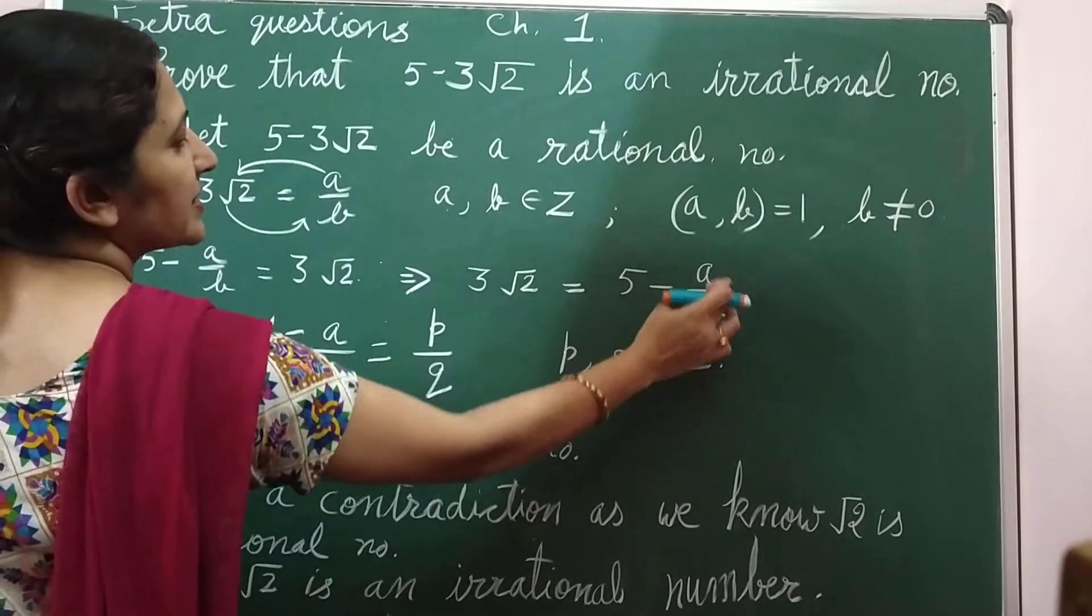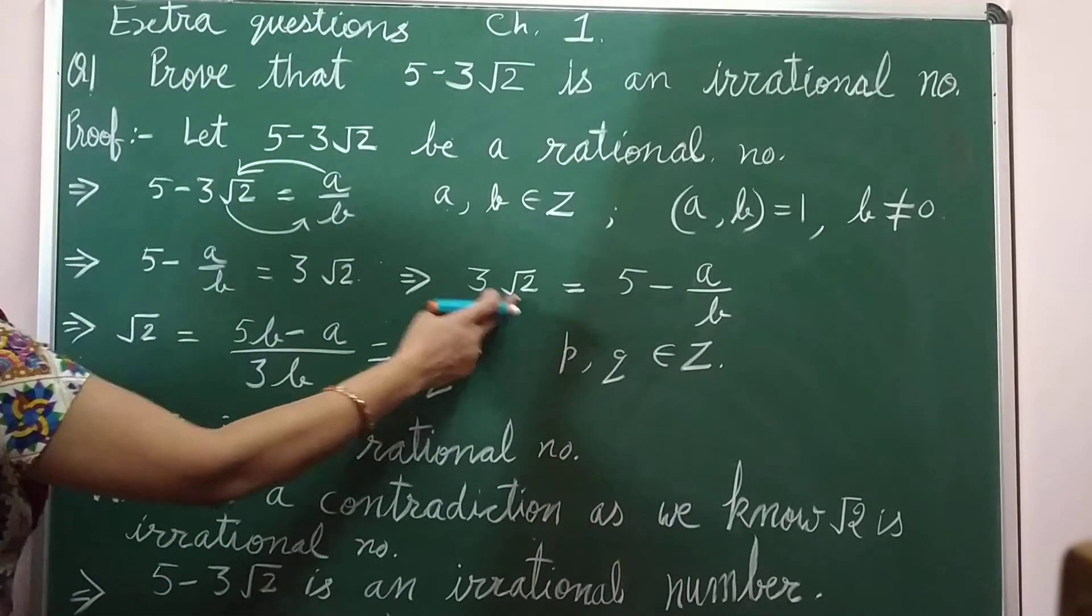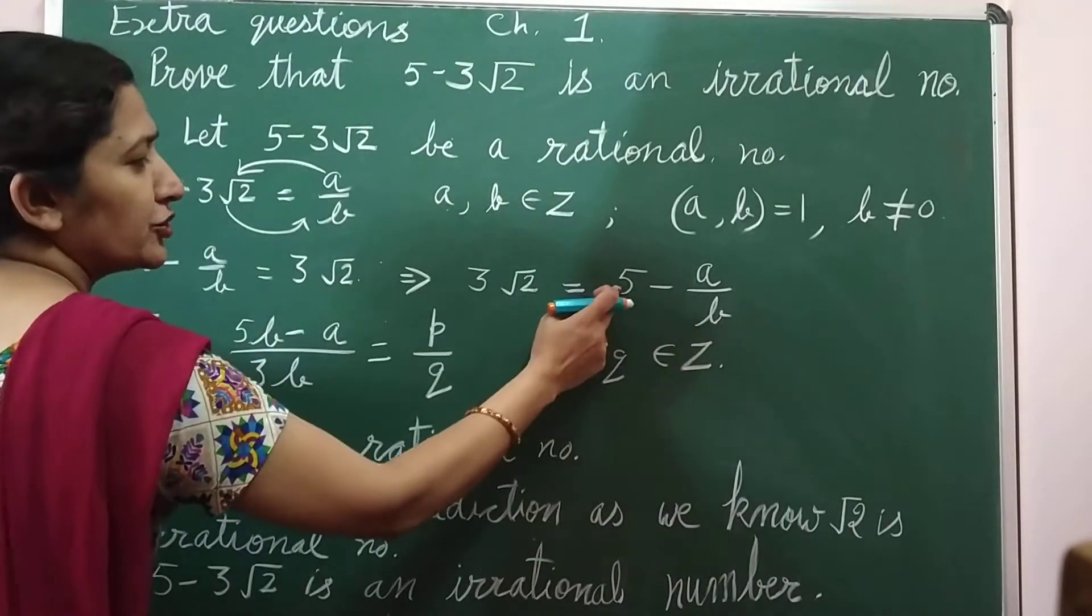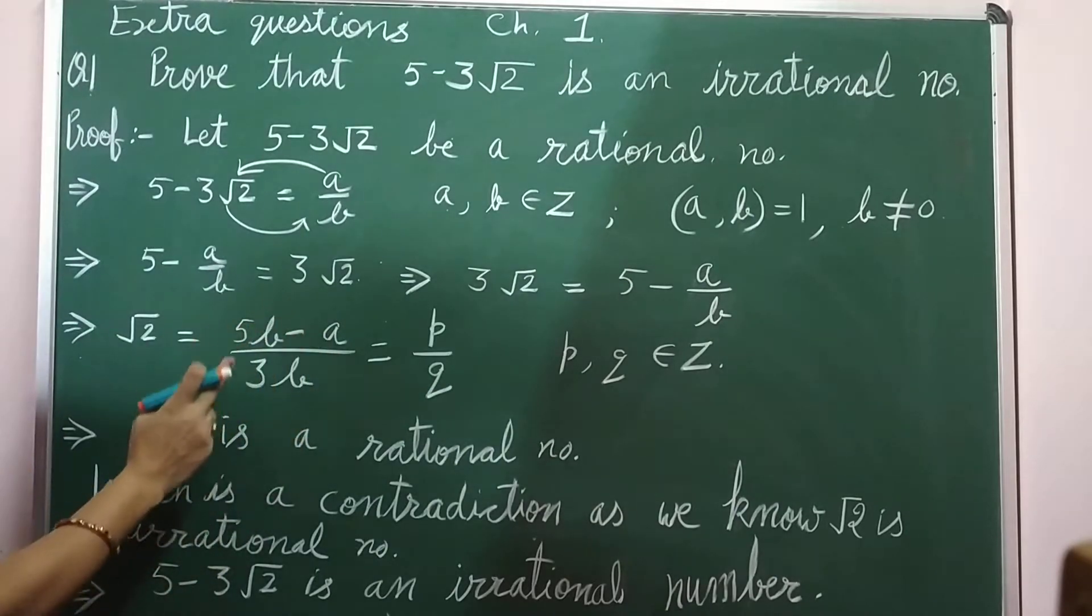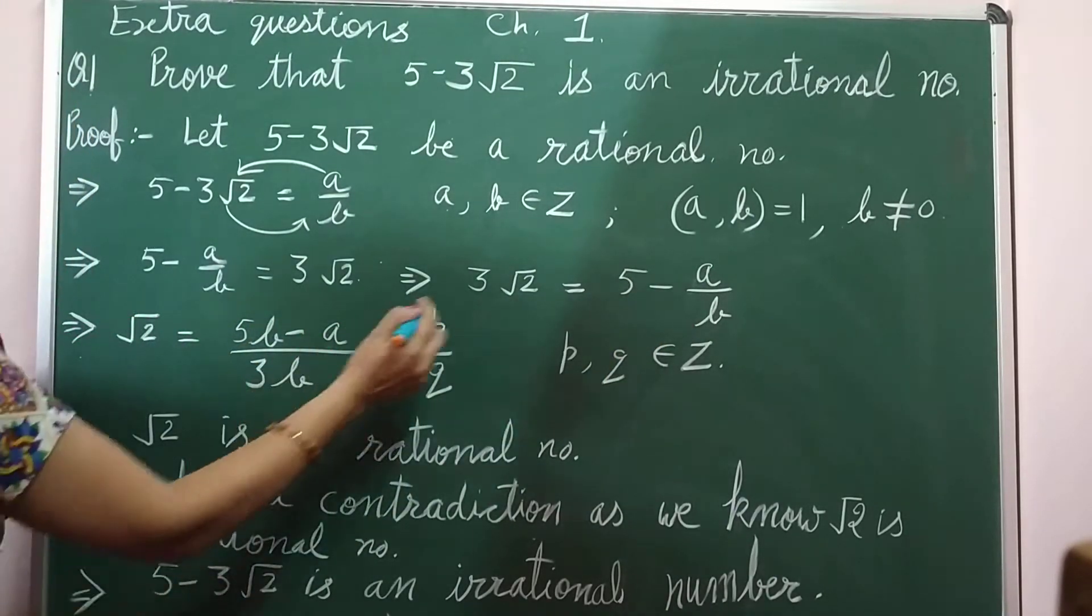Which implies the value of 3 root 2 is equal to 5 minus a over b. From here we will find the value of root 2. It is equal to 5 times b minus a over 3b.